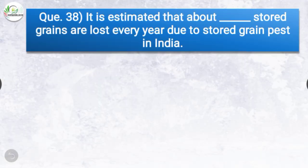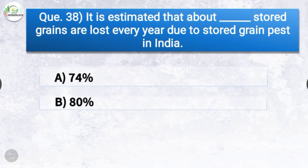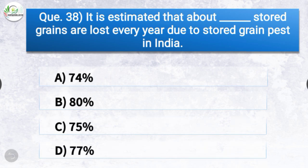Question number thirty-eight: It is estimated that about dash of stored grains are lost every year due to stored grain pests in India. The options are 74%, 80%, 75%, or 77%. The correct answer is option A, 74% — about 74% of stored grains are lost every year due to stored grain pests in India.